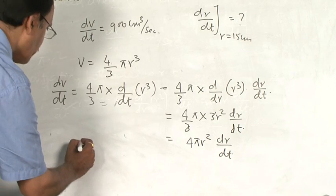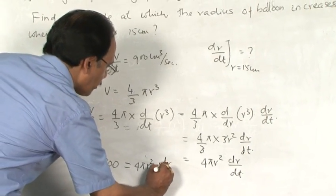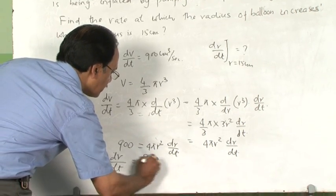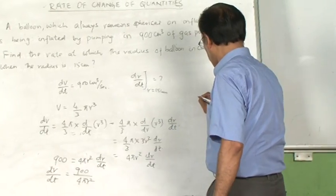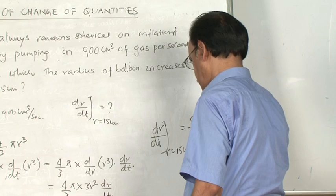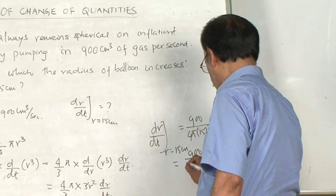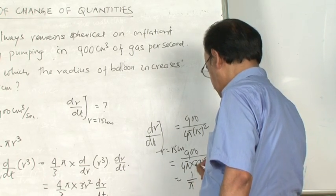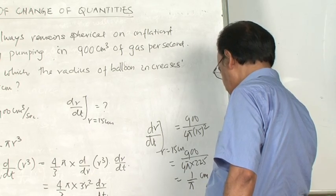Since dV/dt is already given as 900 cm³/s and dV/dt = 4πr² · dr/dt, we get dr/dt = 900 / (4πr²). At r = 15 cm, dr/dt = 900 / (4π × 225) = 900 / 900π = 1/π centimeters per second. This is the answer.